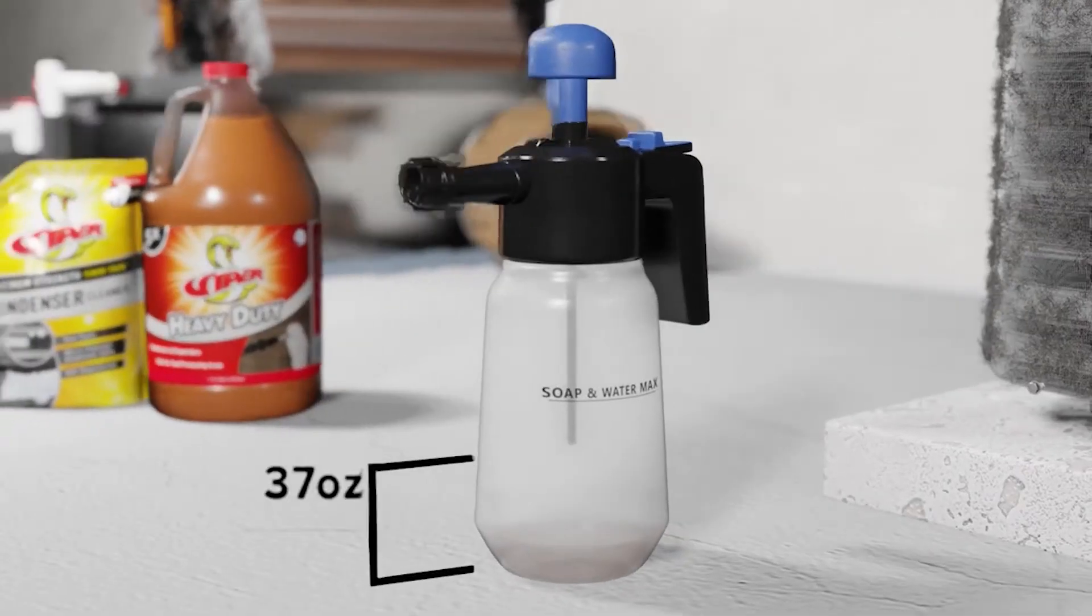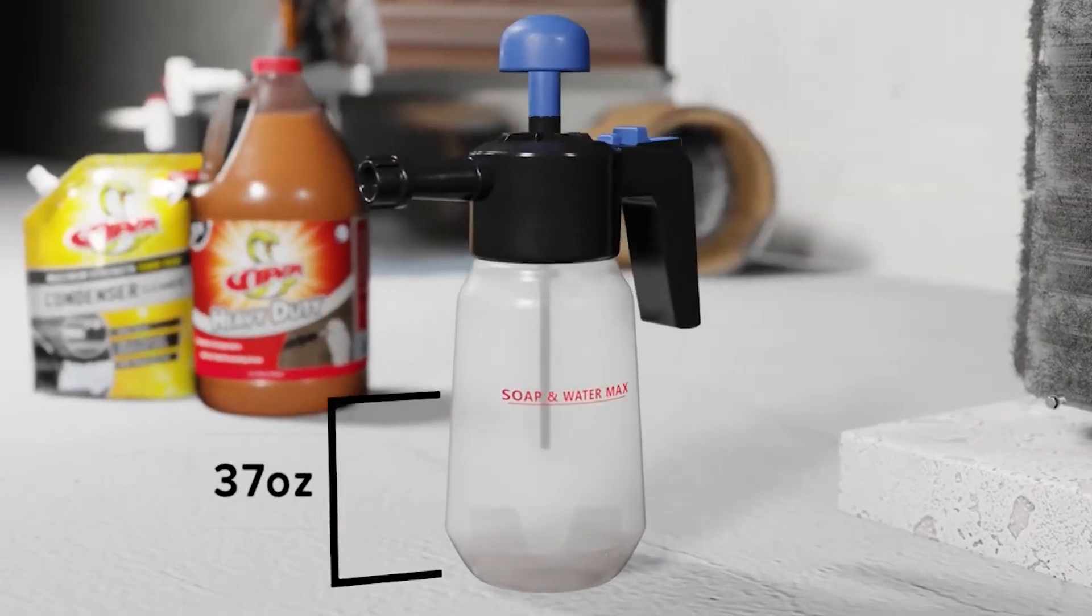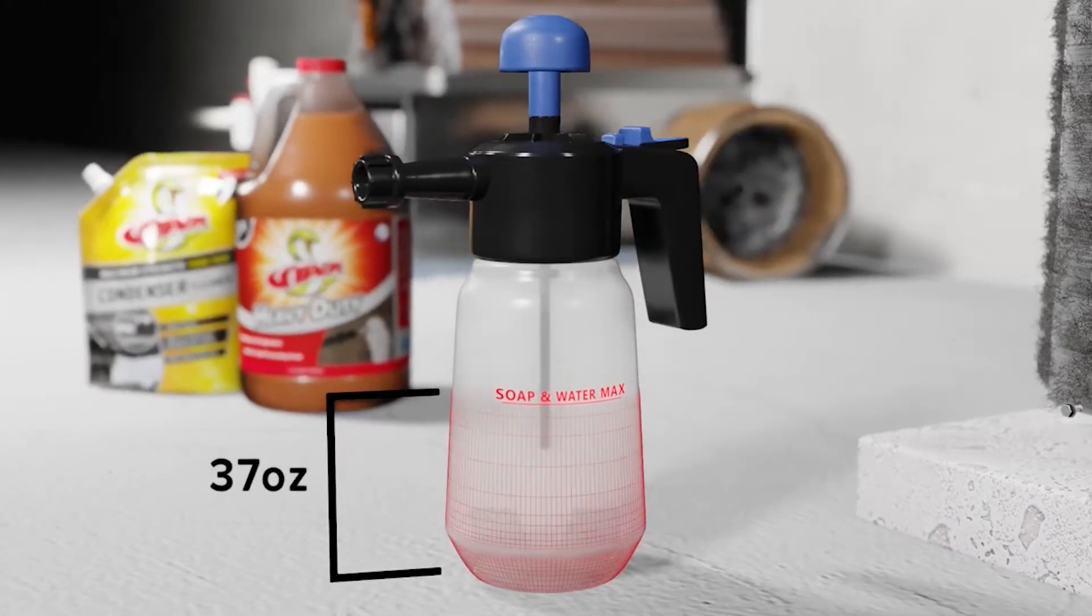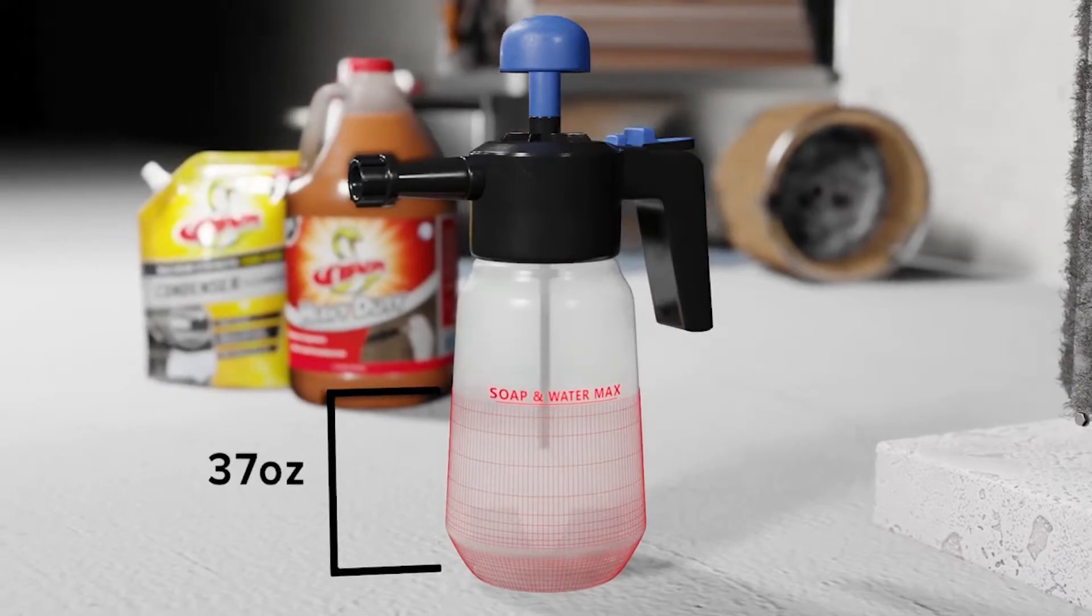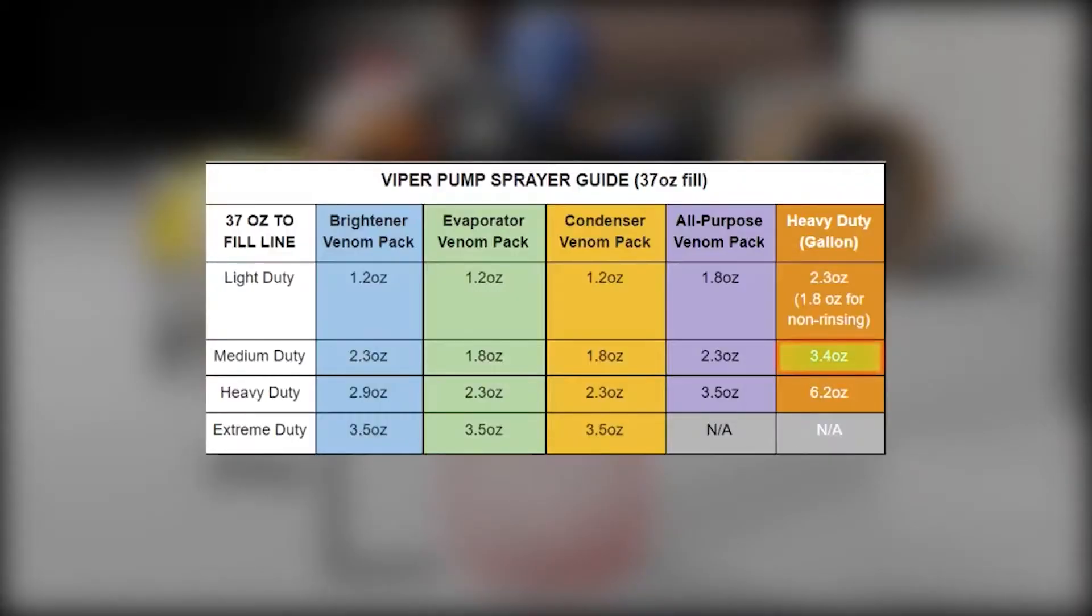First, you're going to need to know the fill volume. In the case of this Refrigeration Technologies pump sprayer, it takes 37 ounces to fill to the line. We've created this pump sprayer guide that shows what medium duty dilution is. In this case, it's 3.4 ounces.